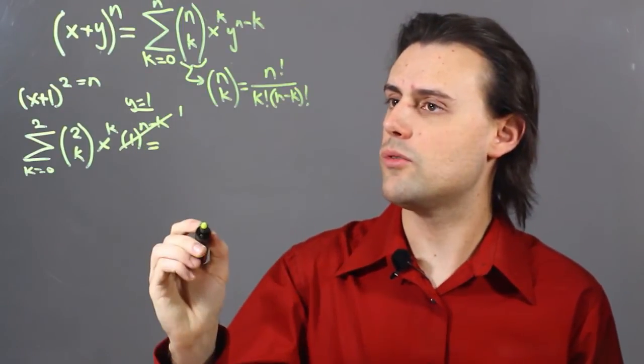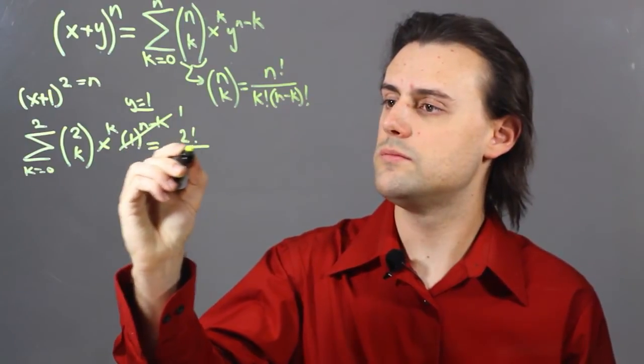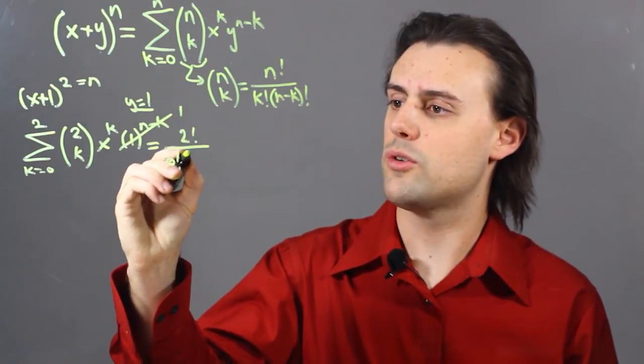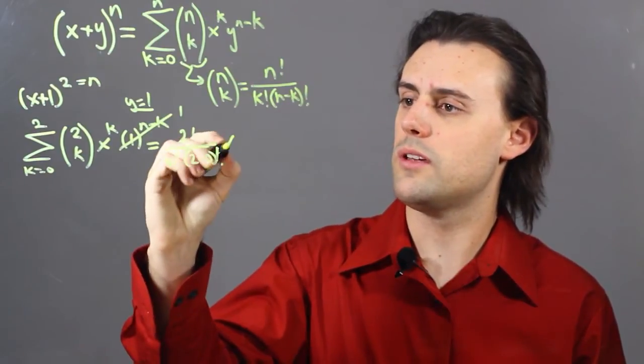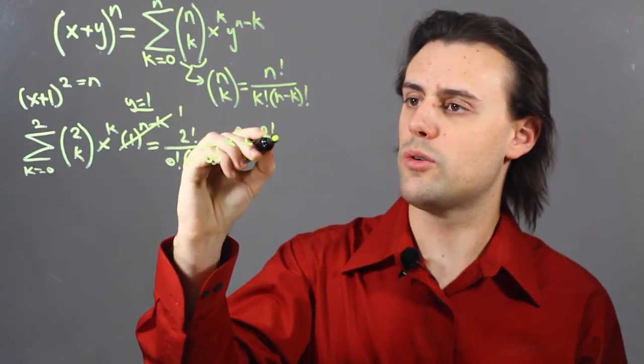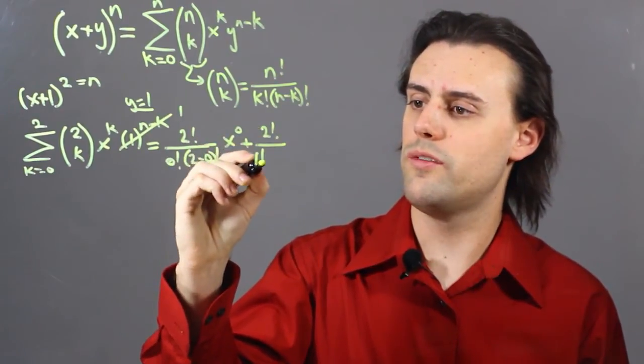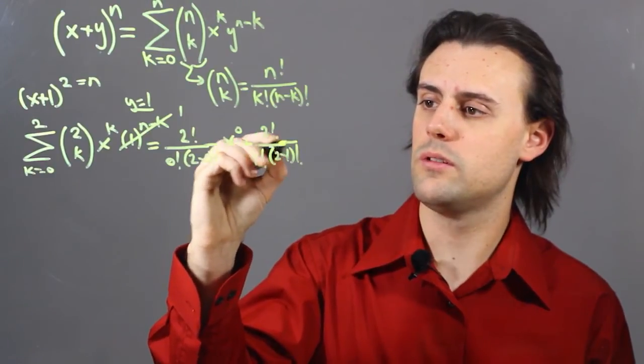So, this sum is going to be equal to 2 factorial over 0 factorial, 2 minus 0 factorial times x to the 0 plus 2 factorial over 1 factorial, 2 minus 1 factorial times x raised to the power 1